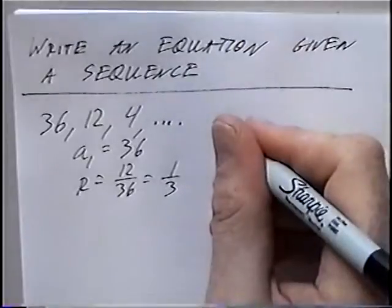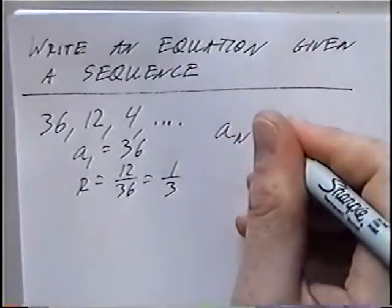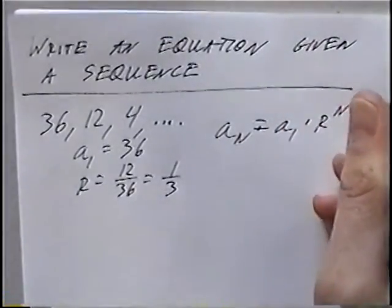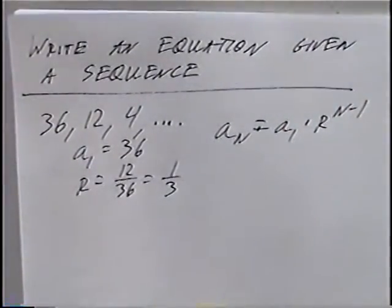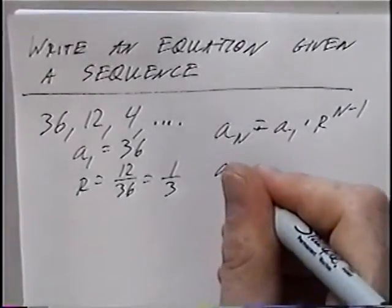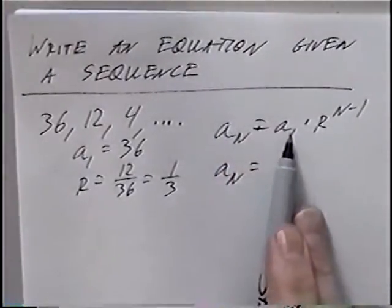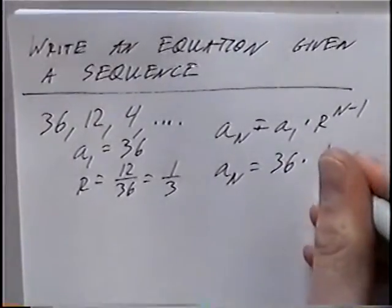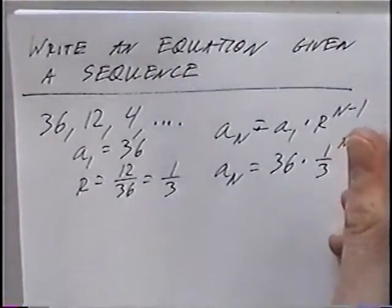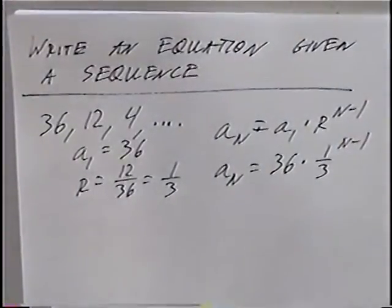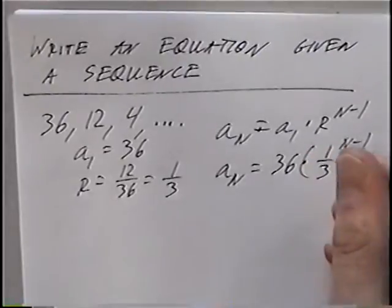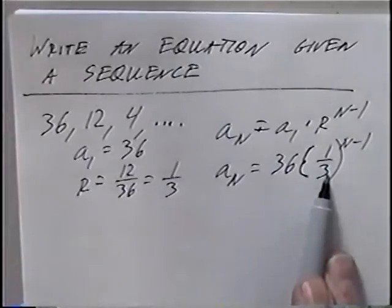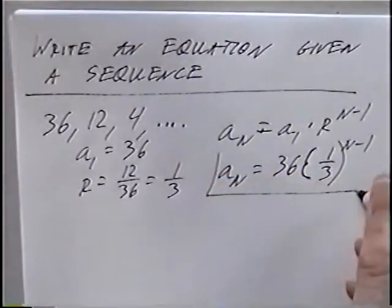Using the formula a sub n equals a sub 1 times r to the n minus 1 power, a sub 1 is 36 and the rate is 1/3. We can put parentheses around the rate to keep it separated. So the equation is: a sub n equals 36 times (1/3) to the exponent n minus 1.